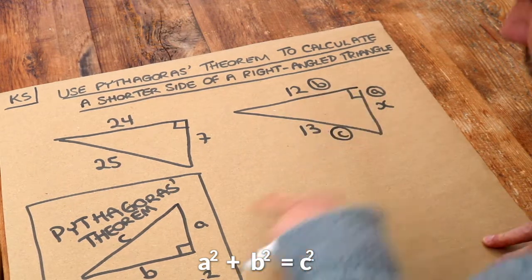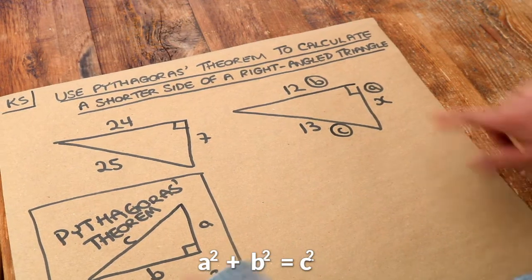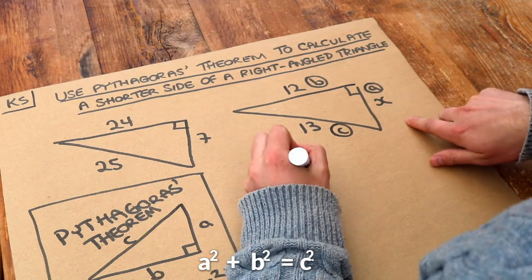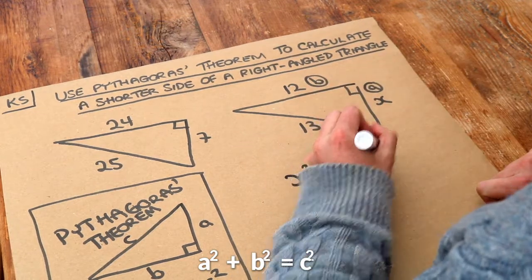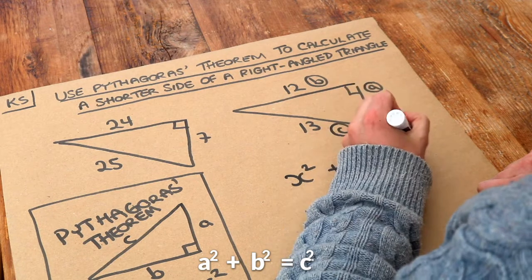Now let's substitute A, B and C into our formula. We've got A squared, which is X squared, plus B squared, which is 12 squared, and that is equal to C squared, the 13 squared.